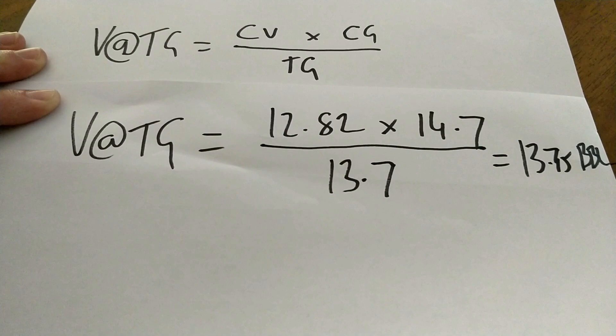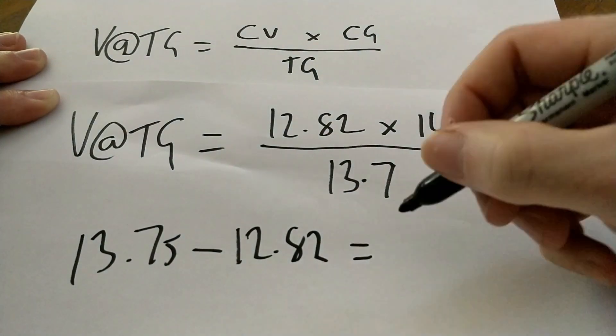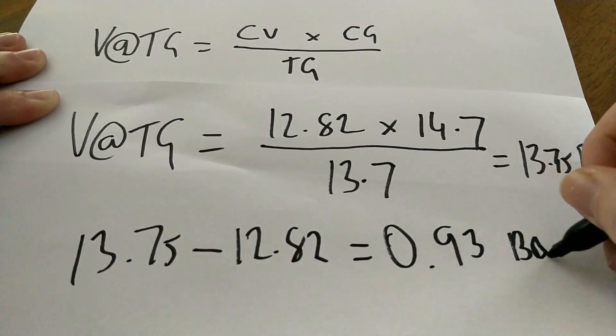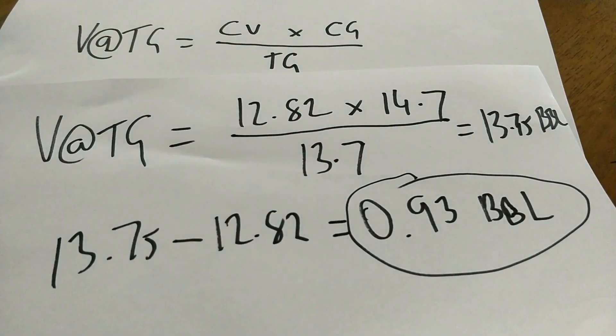Again, let's subtract our 12.82 barrels in the kettle, and we work out we've got a 0.93 barrel liquor dilution required to hit our target gravity of 13.7 Plato.